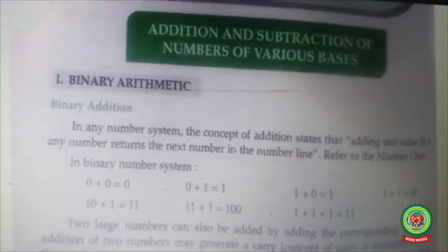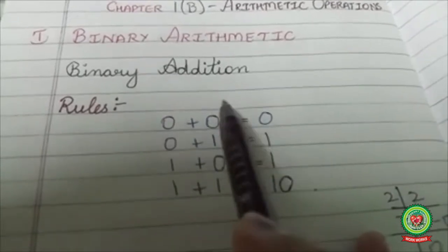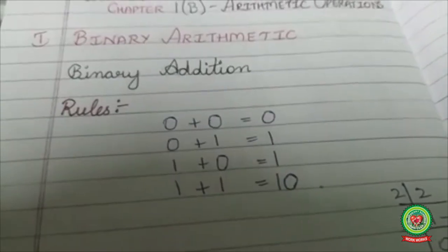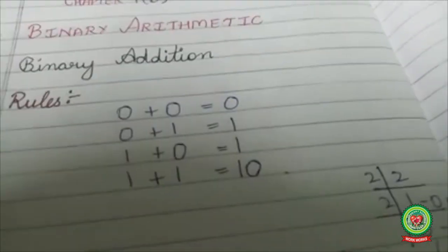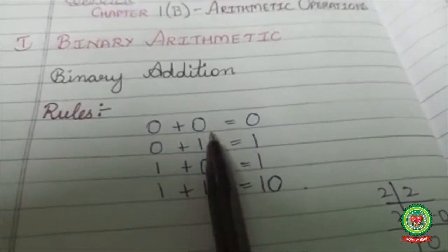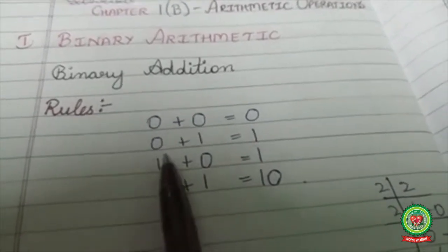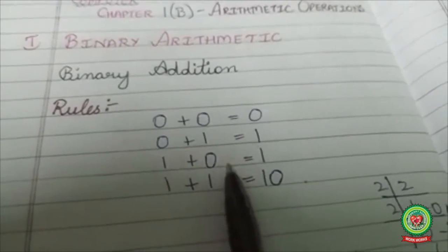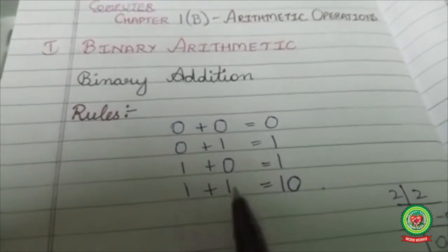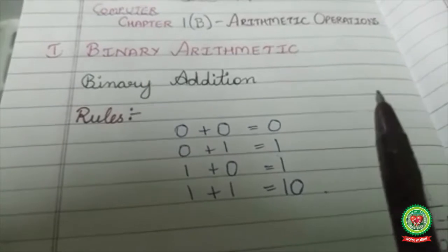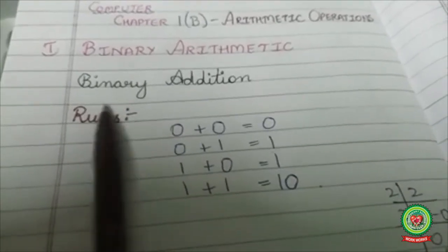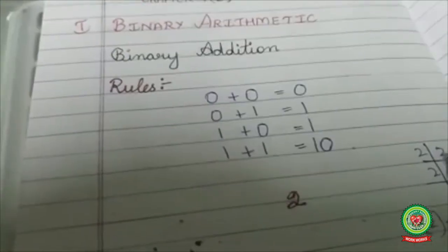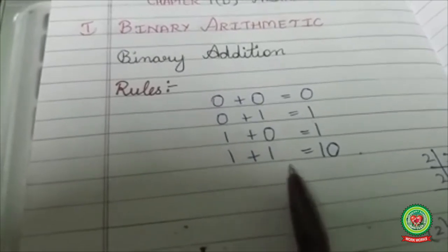In binary addition, the same rules are applicable as in arithmetic addition. You all know: 0 plus 0 is 0, 0 plus 1 is 1, 1 plus 0 is 1, and 1 plus 1 is 2. But in binary numbers we don't have the number 2, so in binary addition, 1 plus 1 is 10.